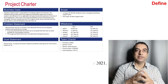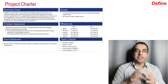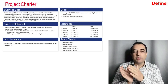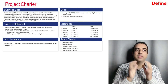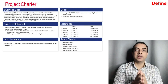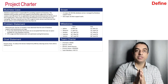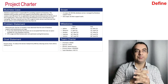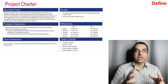Defining the scope of the project is also very important. Clearly define what is in scope and what is out of scope. Next in the Project Charter is timelines — roughly, a Six Sigma project will take four to six months.